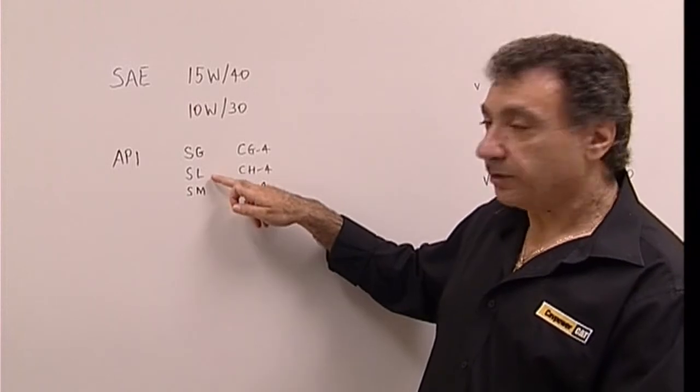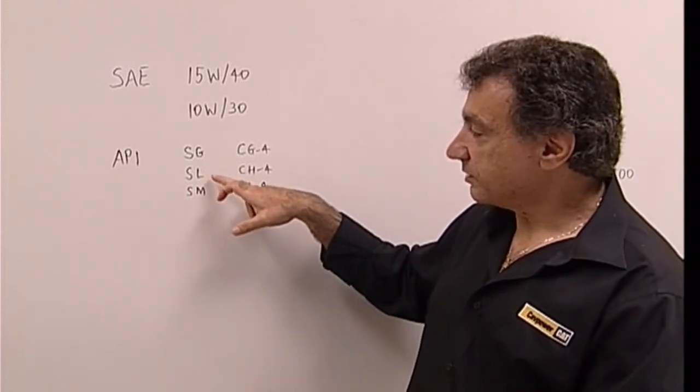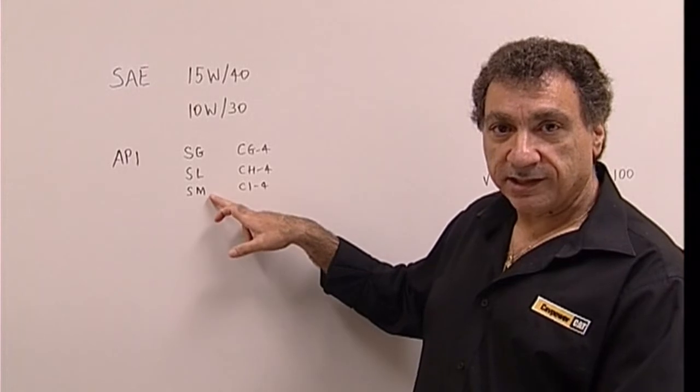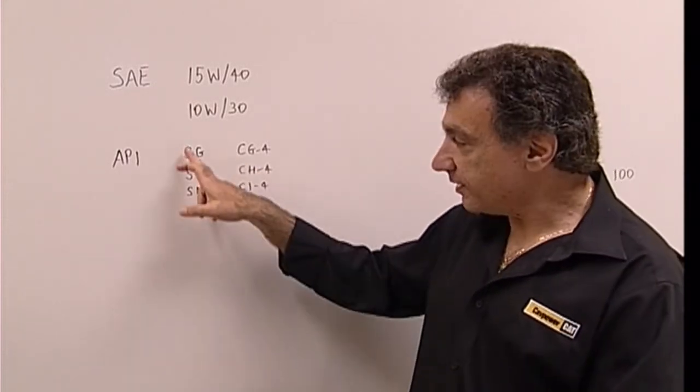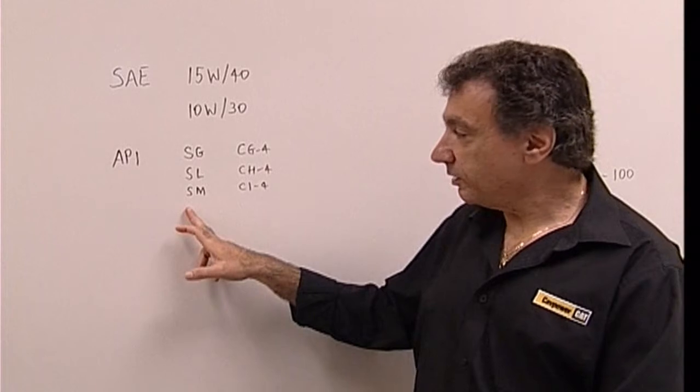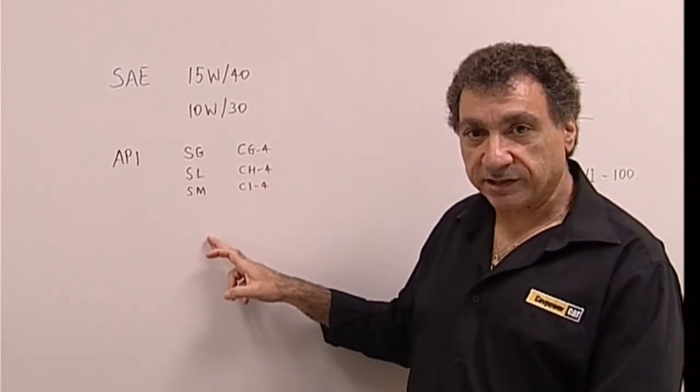So in this case, if they specify an SL API, then you must use an SL or better, like an SM, but you can't go backwards to an SG. The S stands for spark ignition, and the second letter, the higher the letter goes up, the higher the specification.